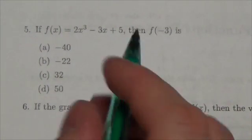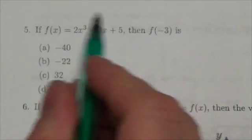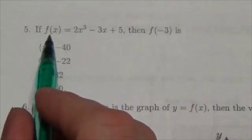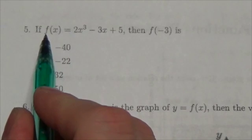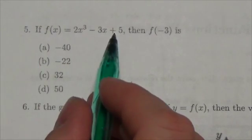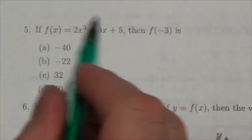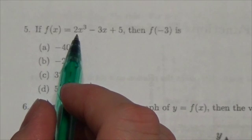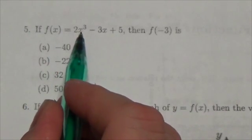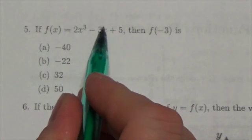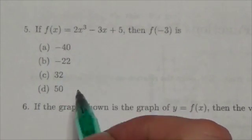Now I'm going to take the opportunity to explain function notation just a little bit here. What the f stands for in function notation in this case is the rule. And the rule as we see it is that we're going to take 2 times the independent variable cubed minus 3 times the independent variable plus 5.